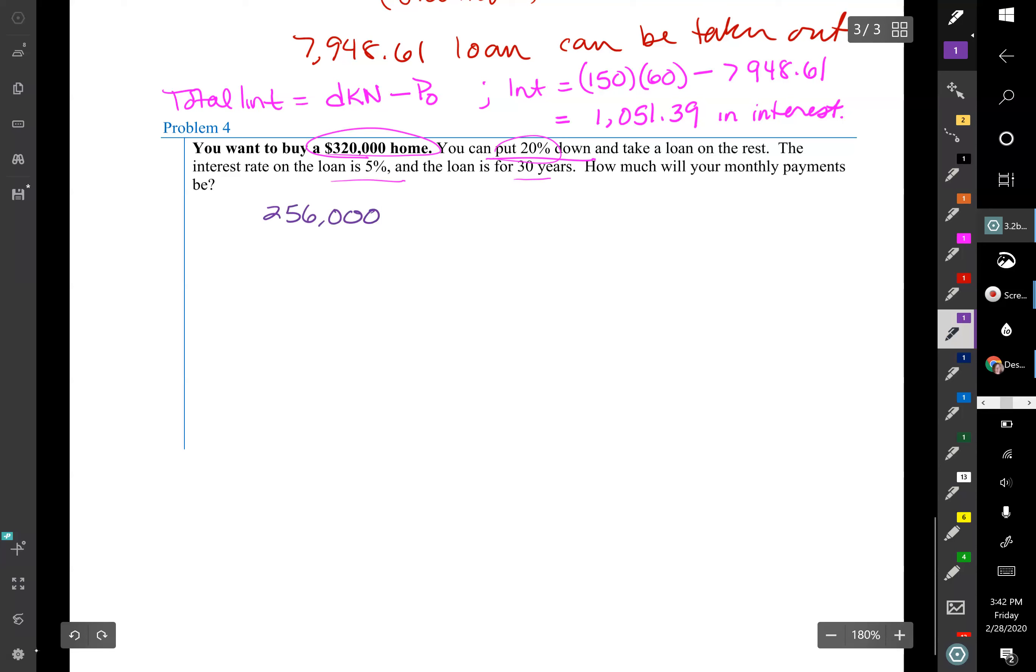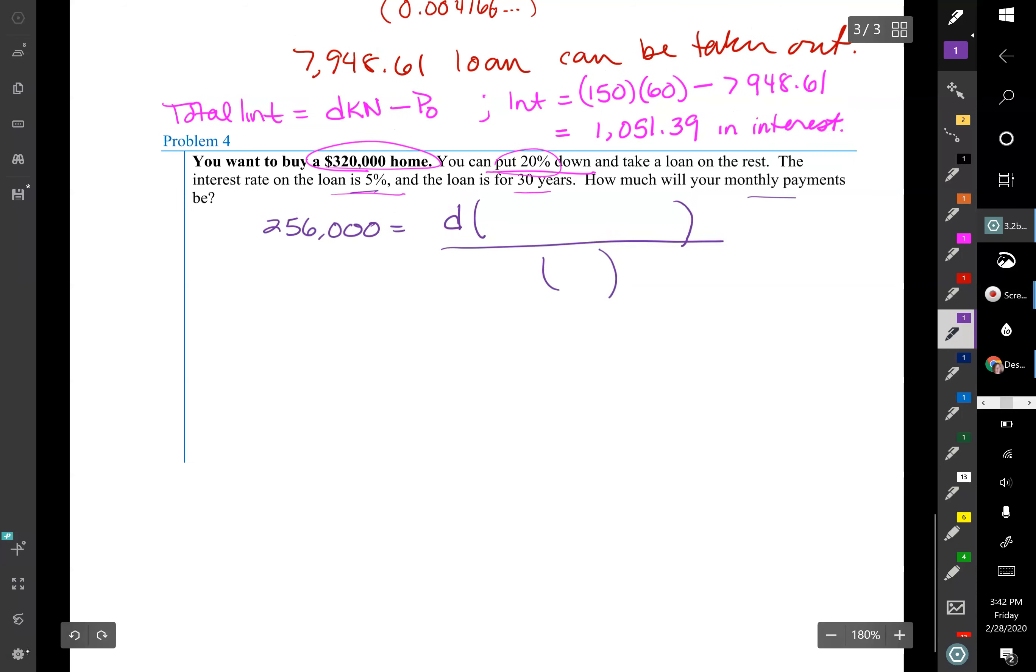And then we're gonna try to find D, and I'm gonna let you pause the video and figure out all the rest that you should fill in there. Okay, and that's again it's a 5% loan at monthly payment, so it's compounded monthly, so you remember those have to match.